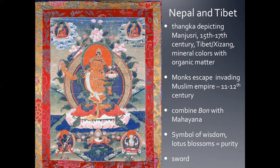My former landlord was Russian, from Siberia; her grandparents had been visited by Tibetan monks who left the thangka with her. When she found out I was an art historian, she gave it to me. Monks fleeing a Muslim empire in the 11th to 12th century combined Bon — the indigenous religion of Tibet — with Mahayana Buddhism, creating probably the most complex form of esoteric Mahayana Buddhism. The compositions in thangkas might remind you of medieval European art: showing iconography rather than space, used both didactically and to beautify spaces.